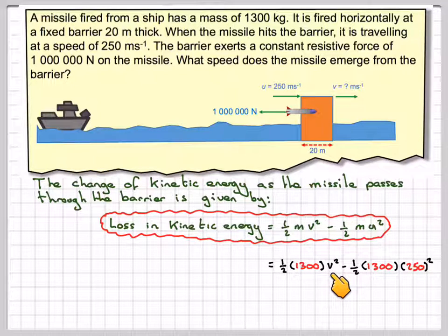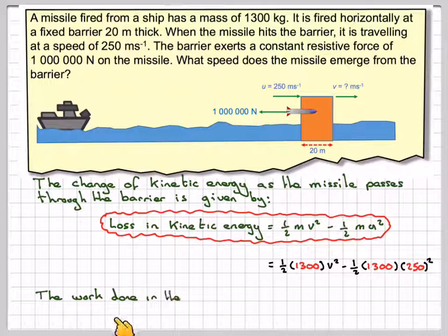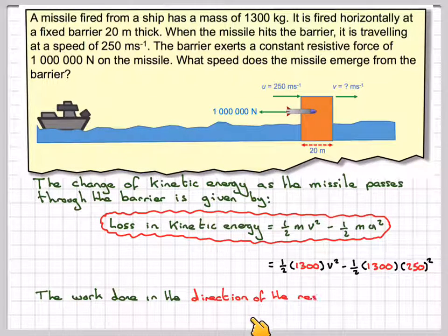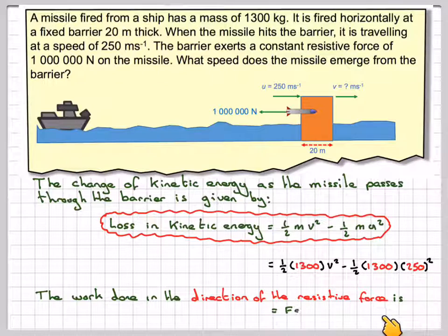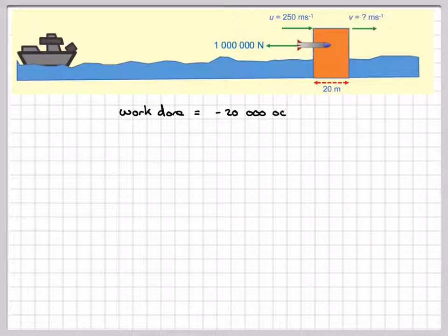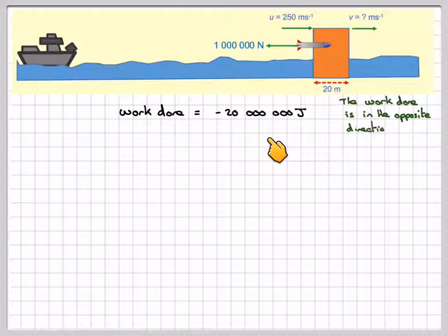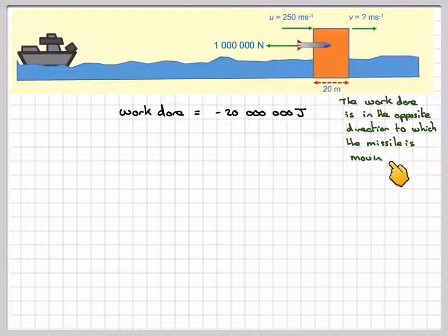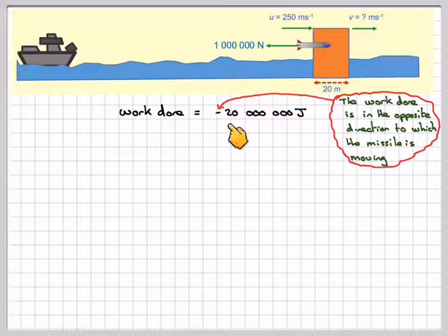We have to find this final velocity. The work done in the direction of the resistive force is F times s. The resistive force is 1 million newtons, so it's going to be minus 1 million because it goes in the opposite direction, times 20 meters, which gives minus 20 million joules. The work done is in the opposite direction to which the missile is moving, therefore it's negative.